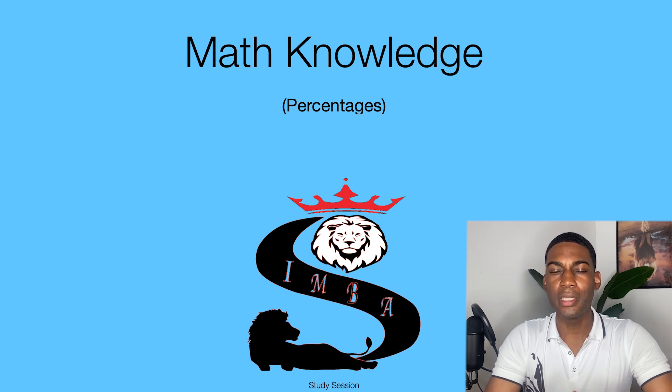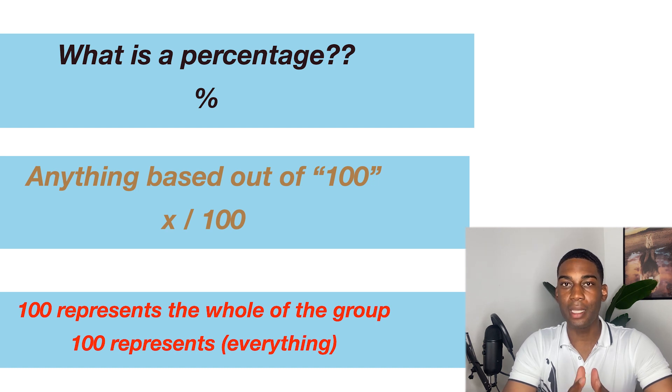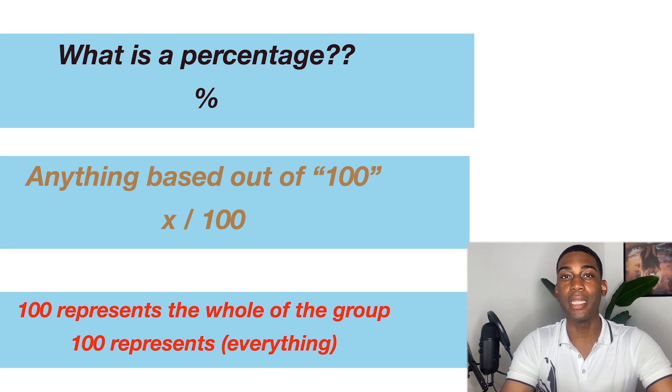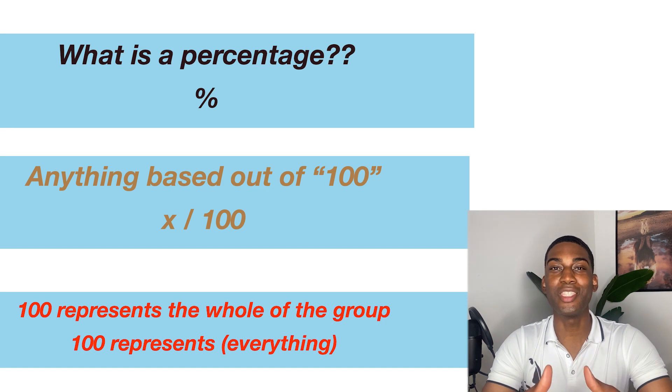Before we jump into the questions, there are some things you need to know. The first: what is a percentage? A percentage is anything based out of 100, meaning 100% is referring to the whole group — the whole bunch, everything. So 100% of the fingers I'm holding up right now would be 10. If someone chopped off 100% of their fingers, all 10 digits would be gone.